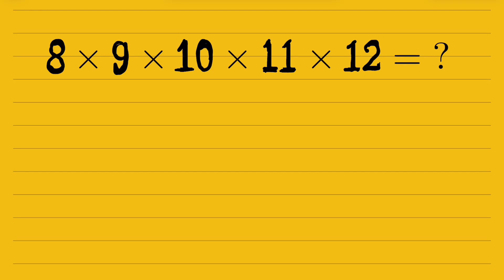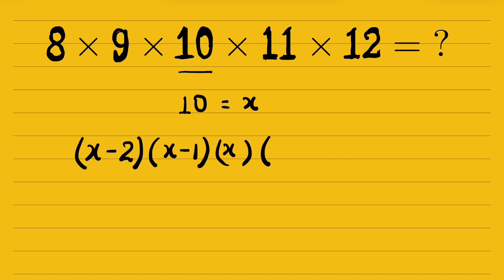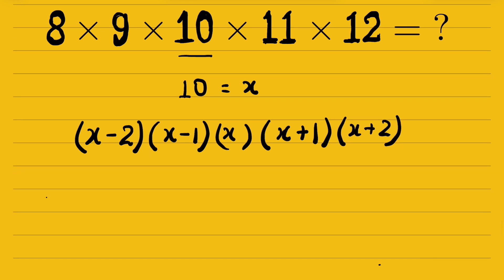8 times 9 times 10 times 11 times 12 — we have to calculate it without using a calculator. Let's try. Let's consider 10 to be x, then we can write 8 as x minus 2, 9 as x minus 1, 10 as x, 11 as x plus 1, and 12 as x plus 2.